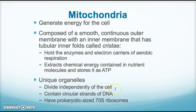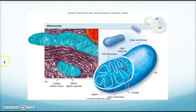The mitochondria is unique in that it divides independently of the cell, contains circular strands of DNA, and has a prokaryotic-sized 70S ribosome. Researchers believe the mitochondria came to be in the eukaryotic cell because it was perhaps a bacterial or prokaryotic cell that was taken in by a eukaryotic organism and used because it's great at producing energy. The picture shows the cristae, the 70S ribosomes resembling those of a prokaryotic cell, and the circular DNA molecule.